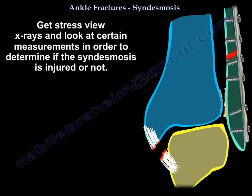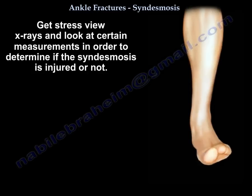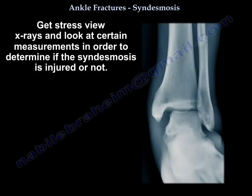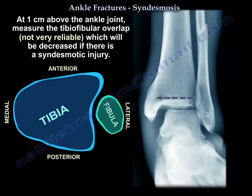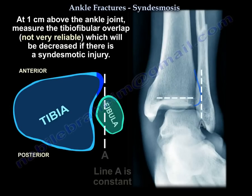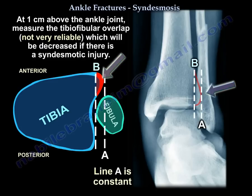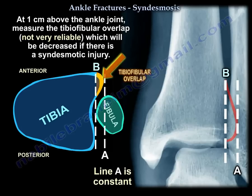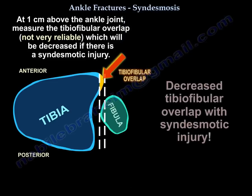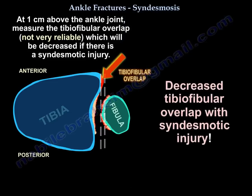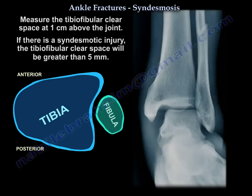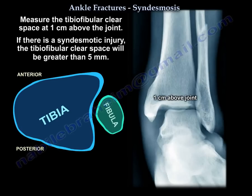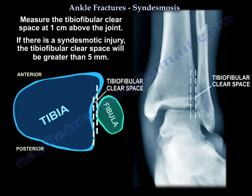We're going to get the stress views and look at certain measurements to decide if the syndesmosis is injured. At 1 cm above the joint, we will measure the tibia-fibular overlap, which will be decreased if there is syndesmotic injury. We're also going to measure the tibia-fibular clear space — if there is syndesmotic injury, it will be more than 5 mm.